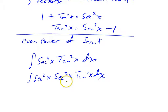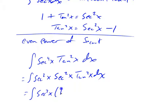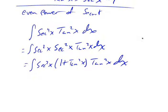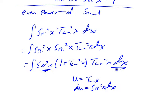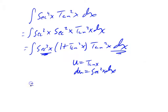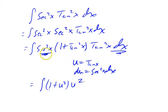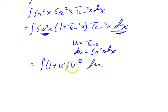So: secant squared x times secant squared x times tangent squared x dx — I've got two of them separated out. These two that are left, I'm going to turn into tangents, because secant squared x is 1 plus tangent squared x. So this becomes (1 plus tangent squared x) times tangent squared x dx. A u-substitution works really well here with u equals tangent x, because du is secant squared x dx, and I've got a secant squared x dx in there.